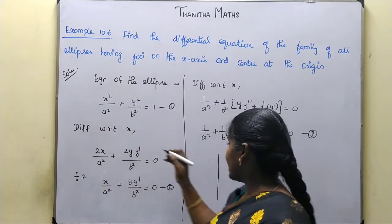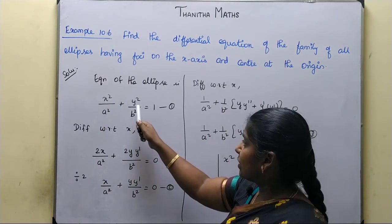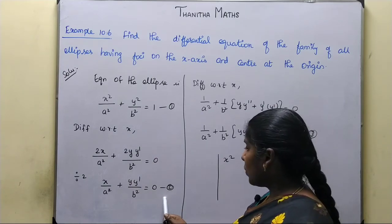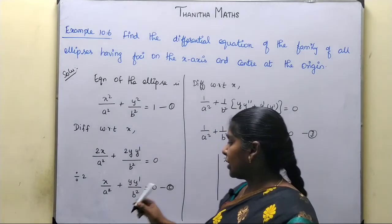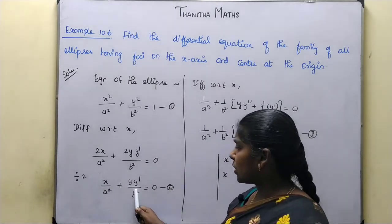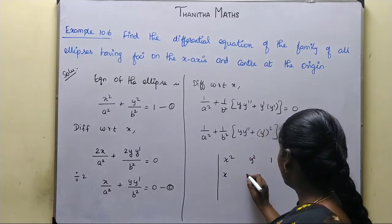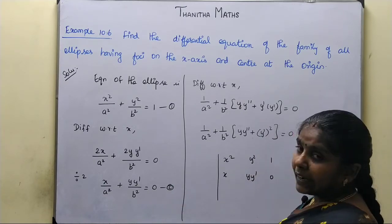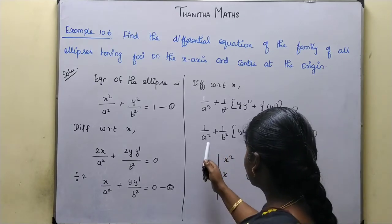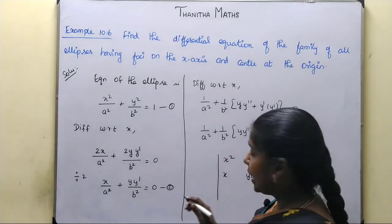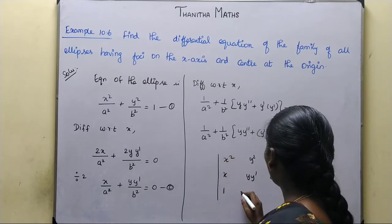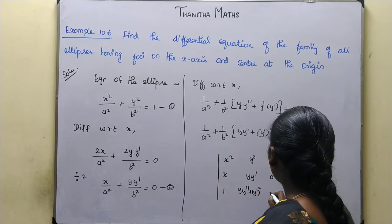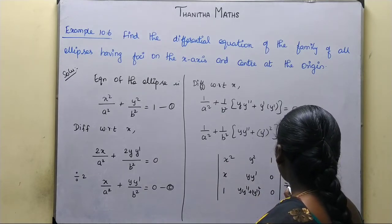Setting up the determinant: first row has coefficients 1/a-squared for x-squared, 1/b-squared for y-squared, and constant 1. Second row has coefficient x for 1/a-squared, coefficient y·y' for 1/b-squared, and constant 0. Third row has coefficient x for 1/a-squared, coefficient y·y'' plus y' squared for 1/b-squared, and constant 0.